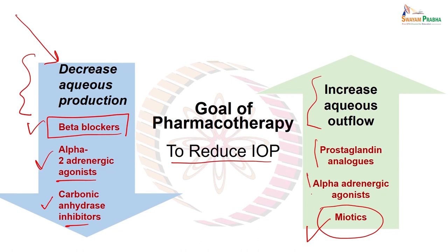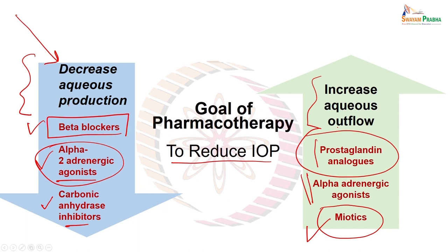Alpha adrenergic agonists have a dual action — they reduce production as well as increase outflow. Nowadays, more commonly used and more effective drugs for increasing outflow are prostaglandin analogs. However, the prostaglandin analogs available are expensive, and therefore not so commonly used in India, but they have the advantage of a longer duration of action.